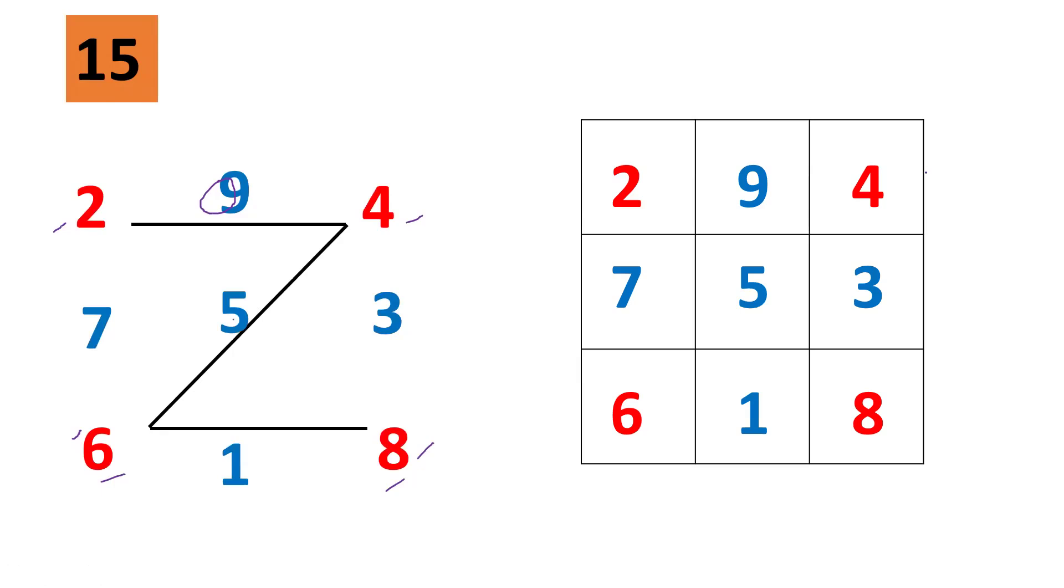Now friends, you can add in all the rows or all the columns. That is 2 plus 7 plus 6, and 9 plus 5 plus 1, or 4 plus 3 plus 8. And the diagonals, that is 8 plus 5 plus 2, or this diagonal 6 plus 5 plus 4. Everywhere you get 15.